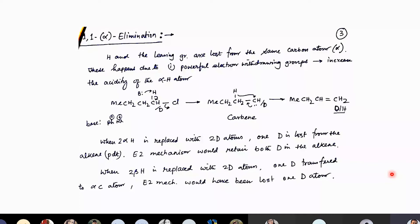In 1,2-elimination, your leaving group goes from the alpha carbon and your hydrogen goes from the beta carbon. But in 1,1-elimination, both your hydrogen and your leaving group leave from the alpha carbon — the same carbon. How could this happen? This could happen if you have a very powerful electron-withdrawing group attached to the alpha carbon, which would increase the acidity of that alpha carbon. Also, the base you take must be very strong. Then this kind of mechanism would take place.